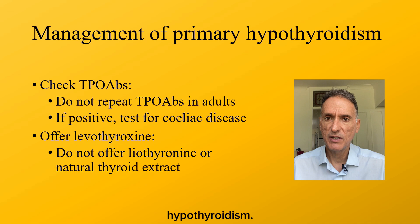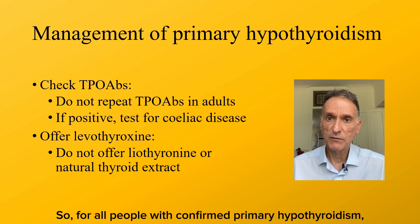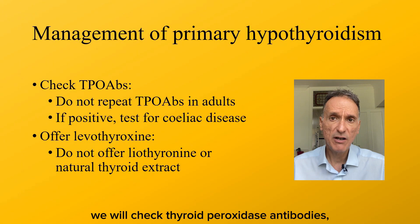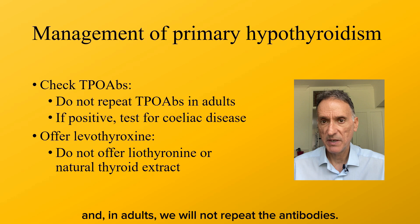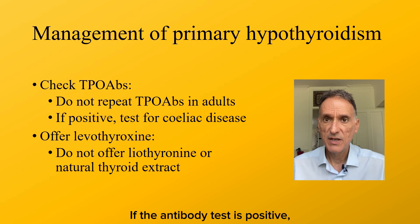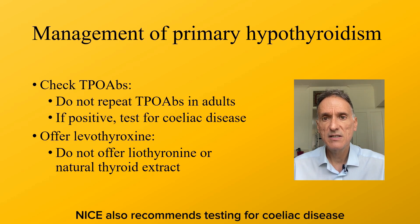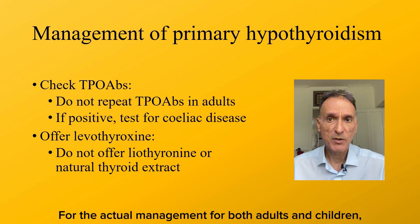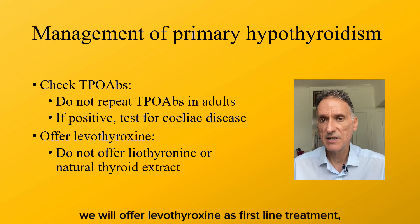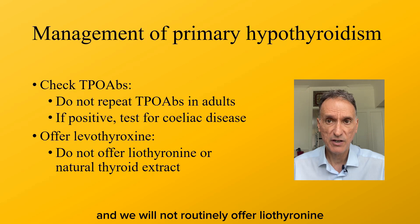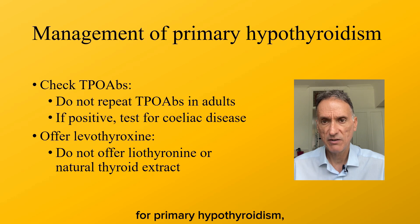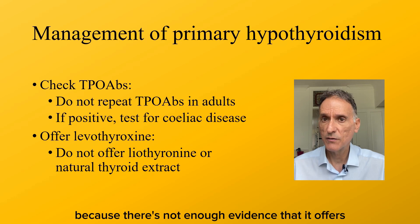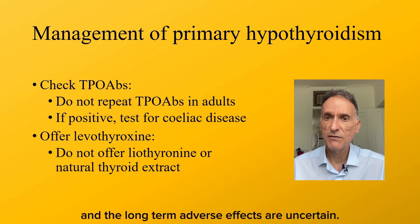Let's start with the management of primary hypothyroidism. For all people with confirmed primary hypothyroidism — a high TSH and a low free T4 — we will check thyroid peroxidase antibodies, and in adults we will not repeat the antibodies. If the antibody test is positive, it may be worthwhile noting that NICE also recommends testing for coeliac disease in people with a diagnosis of autoimmune thyroid disease. For both adults and children, we will offer levothyroxine as first-line treatment, and we will not routinely offer liothyronine or natural thyroid extract, either alone or in combination with levothyroxine, because there is not enough evidence that it offers benefits over levothyroxine and the long-term adverse effects are uncertain.